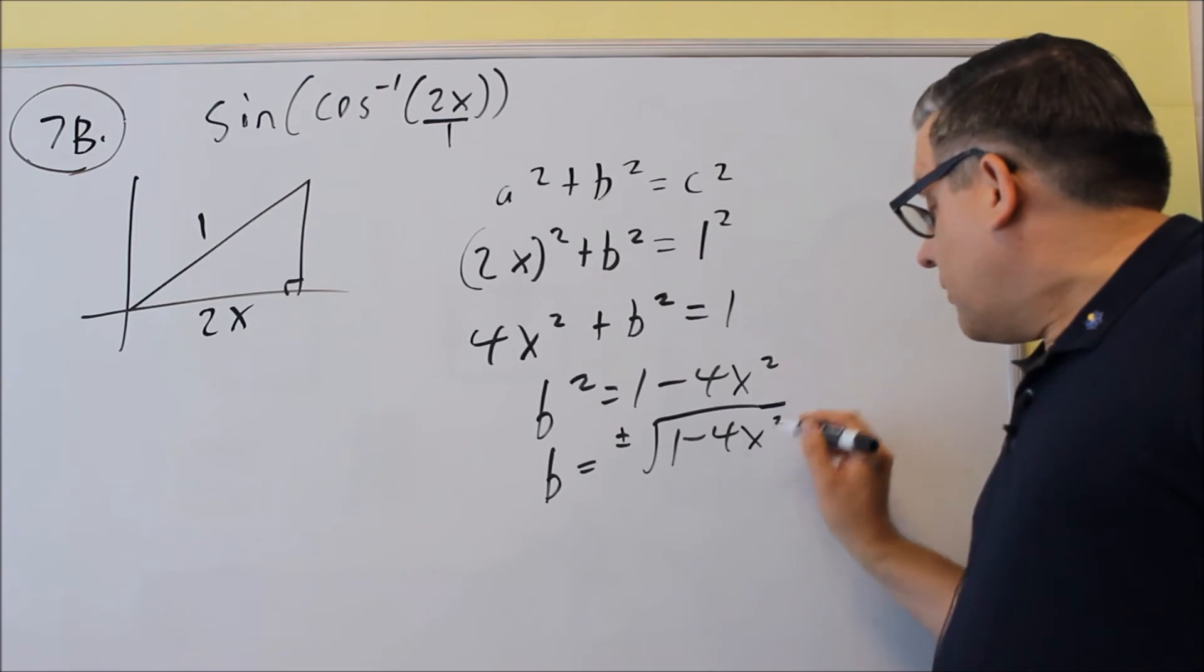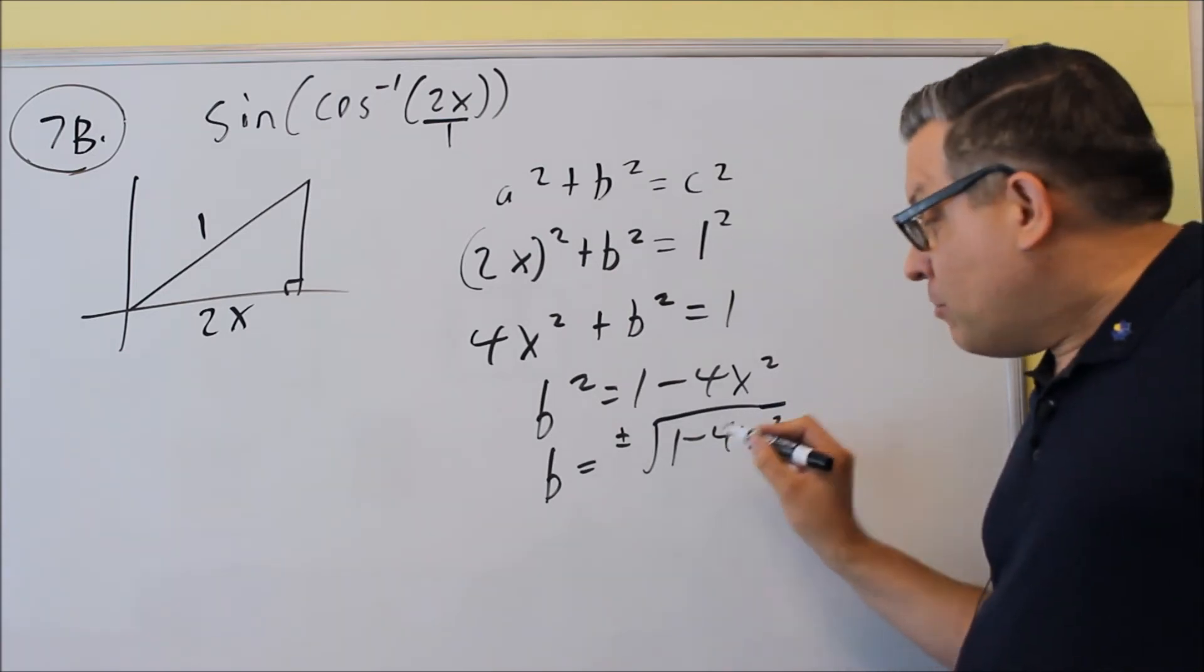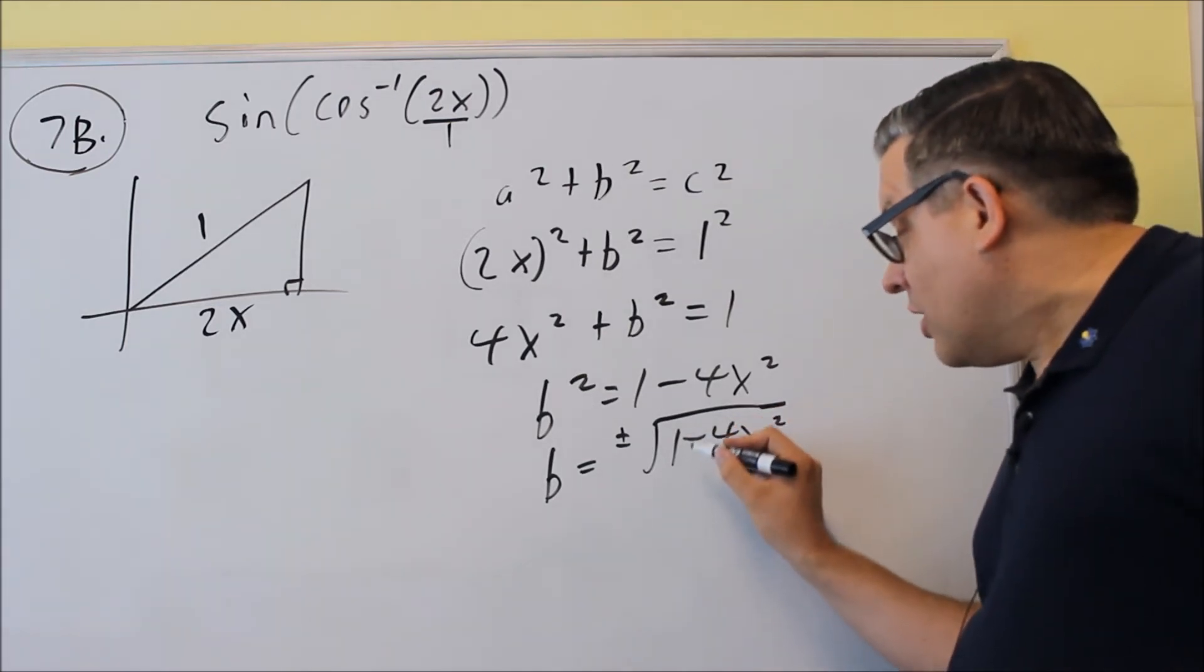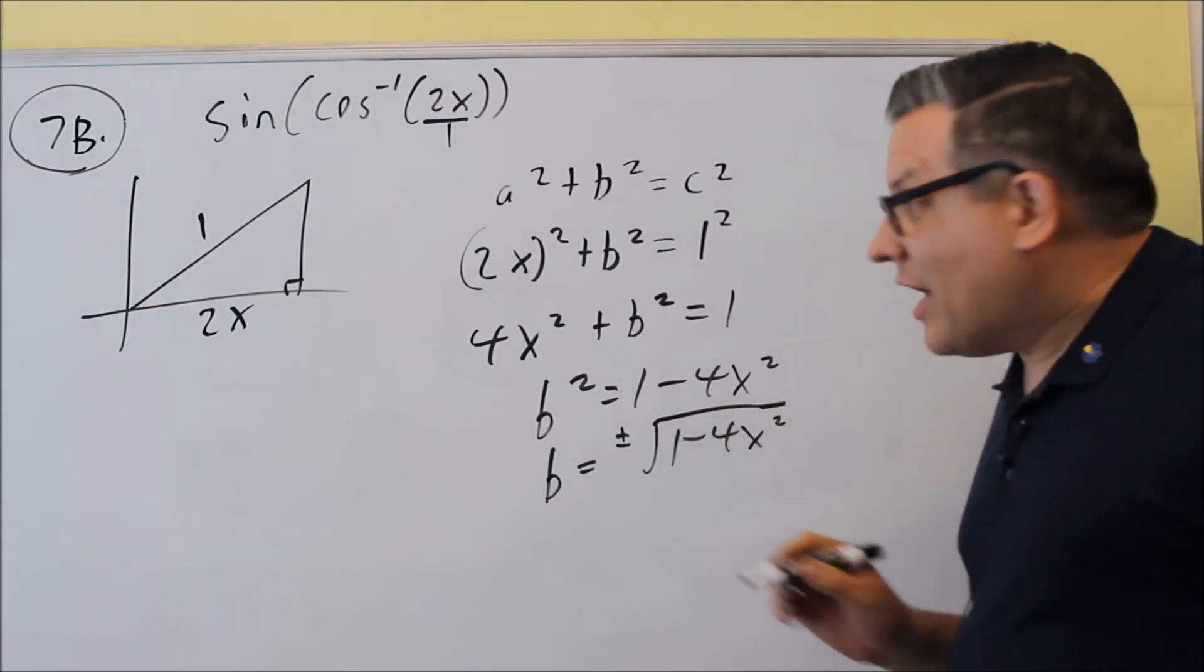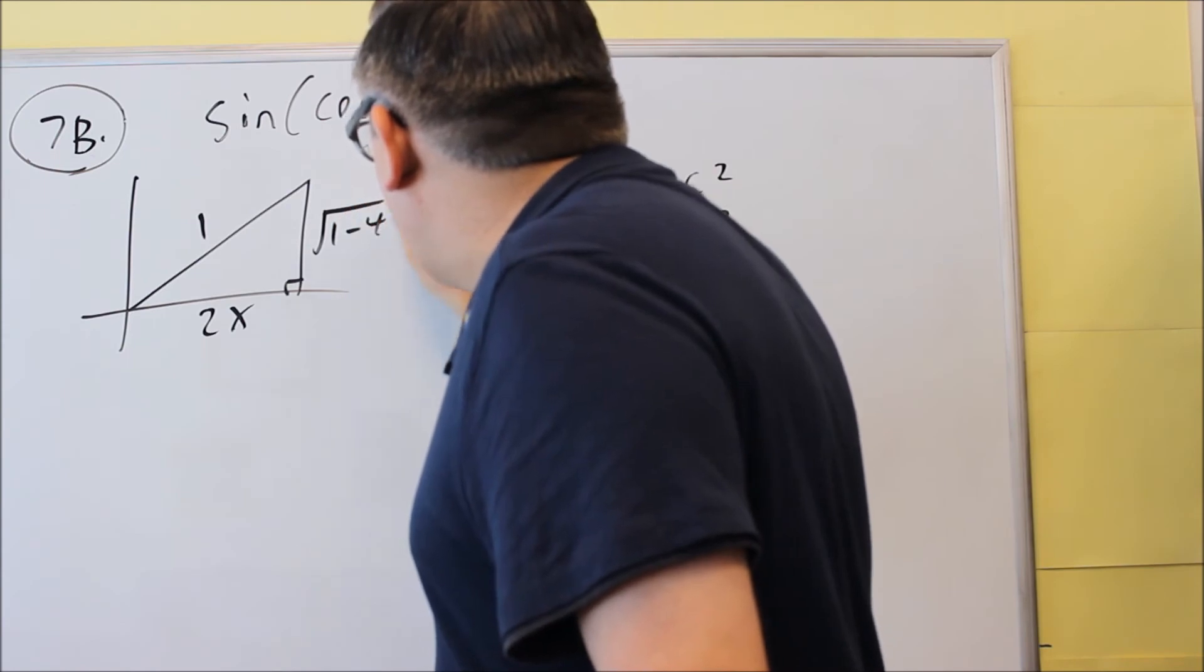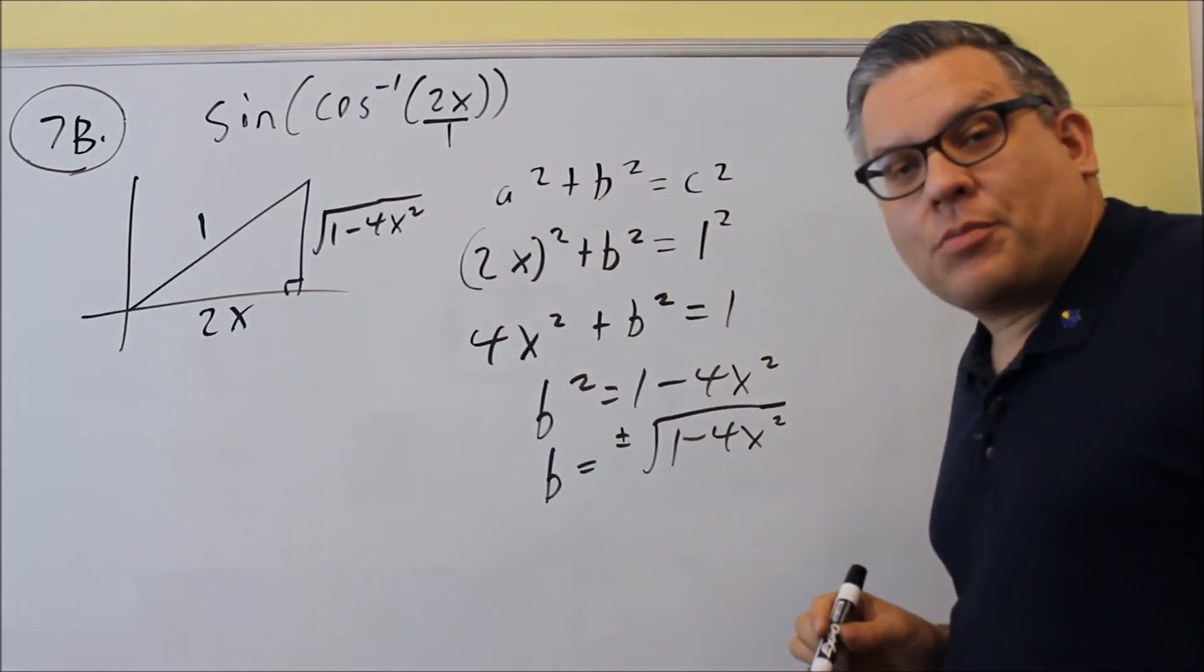And also, one thing is, you cannot square root each of these separately. Because if you have a minus or a plus sign between those, you're never allowed to break that up. So I can't take the square root of each of those separately, I need to leave it just like that in that form. So I'm going to have positive square root of 1 minus 4x squared, and that would be my completed triangle.